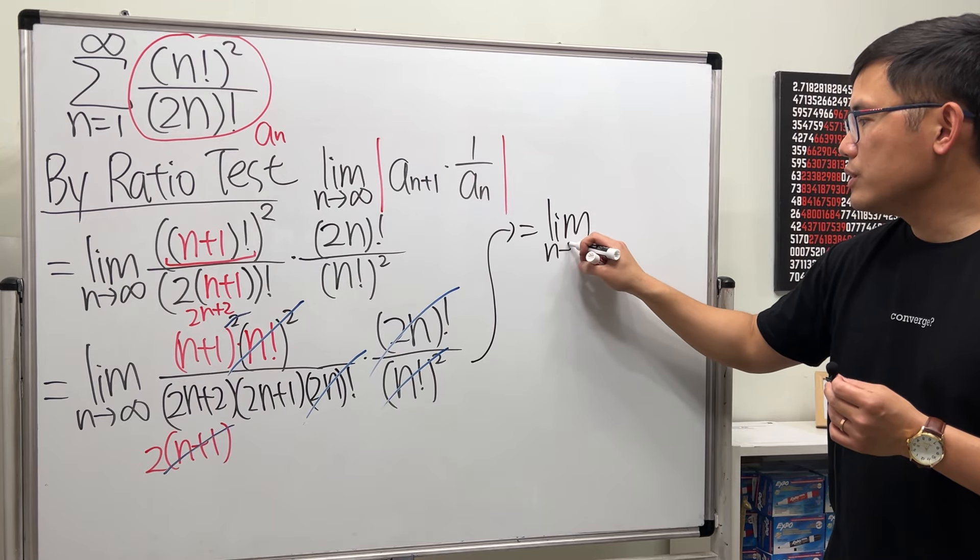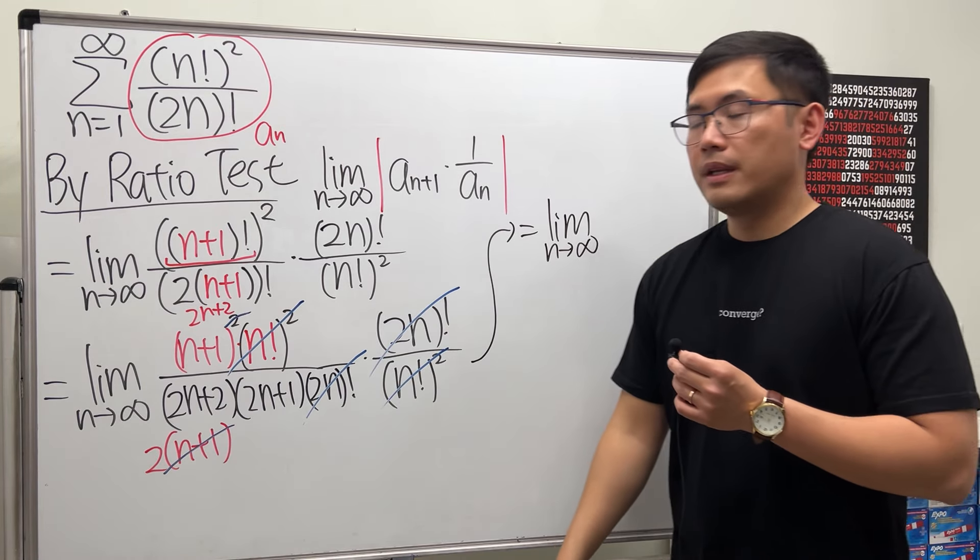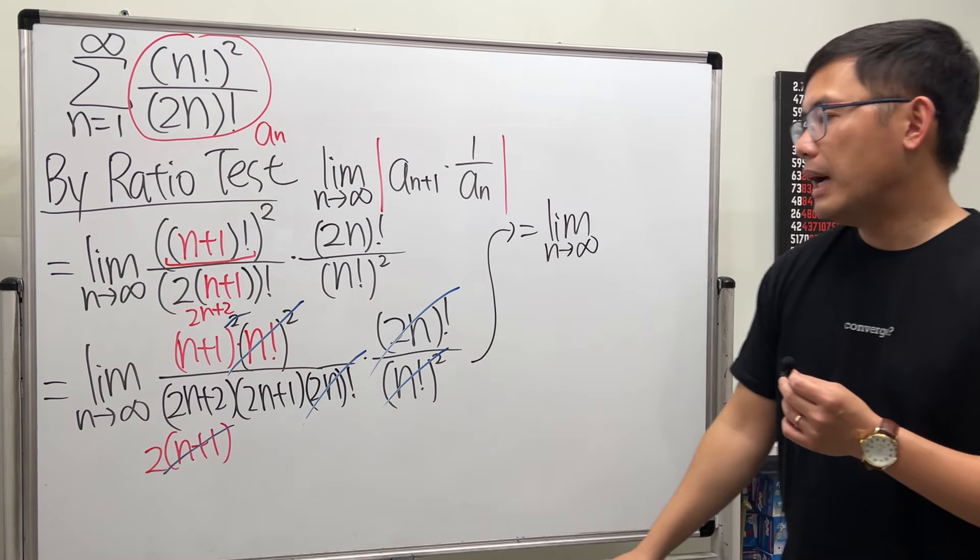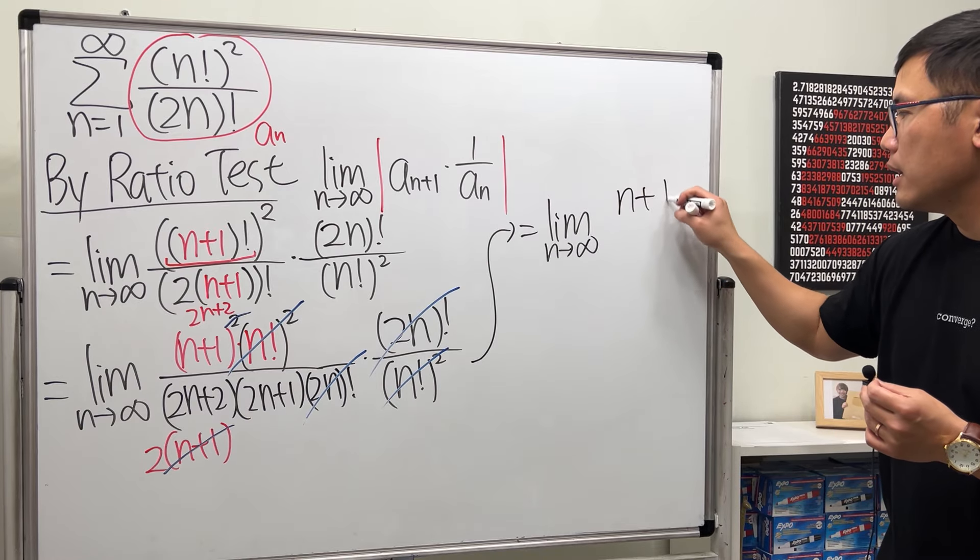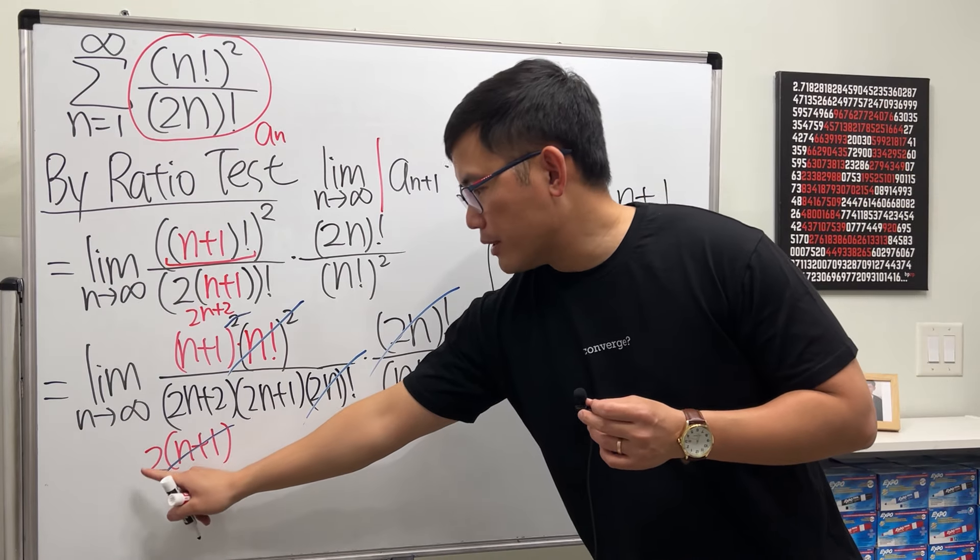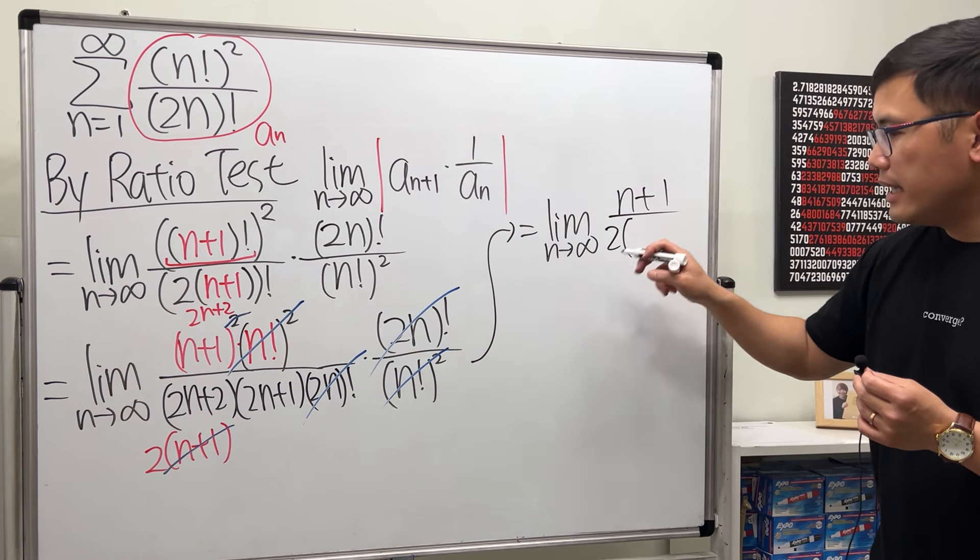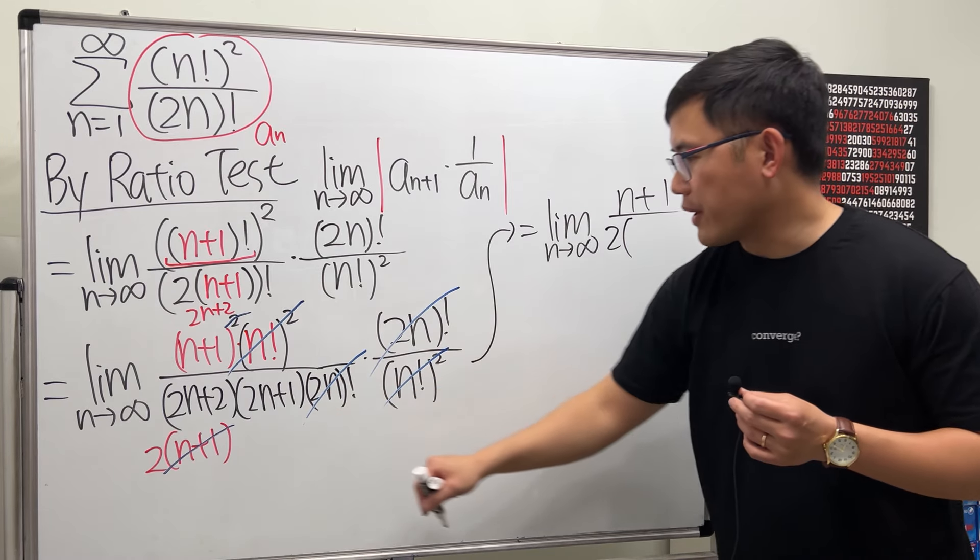Now we are looking at the limit as n goes to infinity. For the top we just have n+1, and for the bottom we have the 2, and then 2n+1 from here.